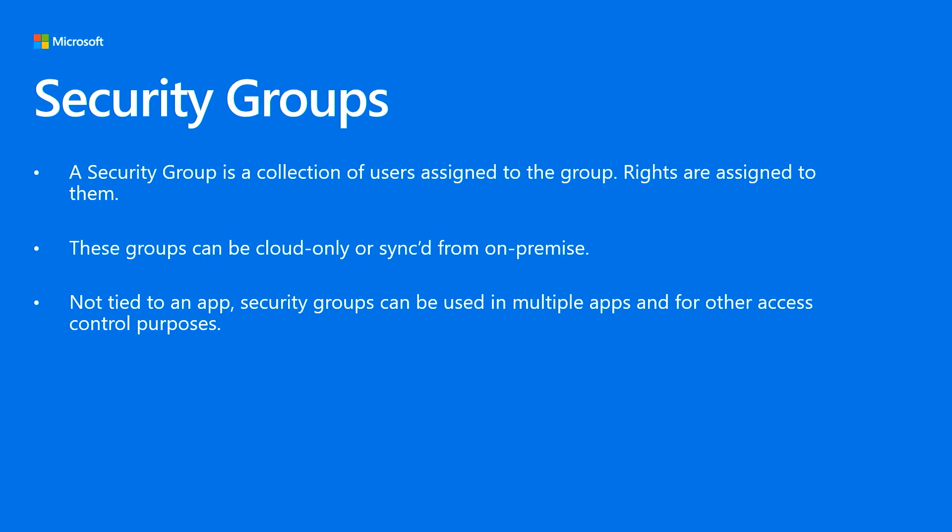Sometimes you have a suite of apps and you want to grant access to just those apps for a set of users. Instead of using user configuration across all those different apps, an administrator might decide to use a group for all those apps. Just by using group management and adding a user to that group, they automatically get access to all those applications. Note that at this moment we don't support nested groups in Azure Active Directory.